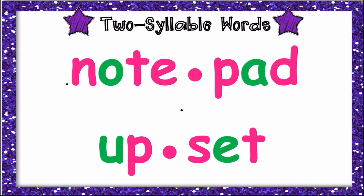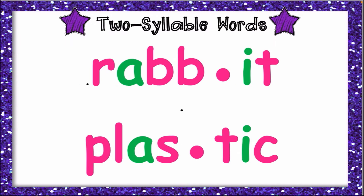We have 'notepad' and 'upset'. Take note of the vowels — there are just two. We have 'rabbit' and 'plastic'. 'Rabb' is the root word while the ending is 'it'. 'Plast' is the root word while 'ic' is the ending.